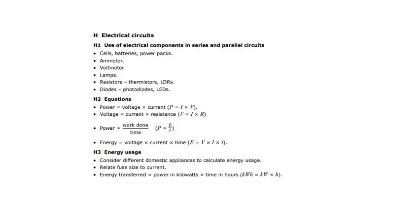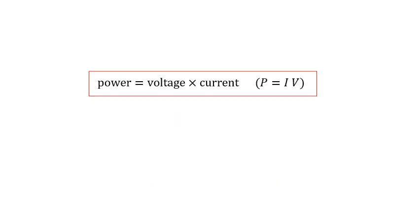First equation: power. Power is voltage times current. I'm going to try and just look at the equations. P equals I times V. They say power is voltage times current. Why didn't they just say P equals VI? Because they're mad, basically. Anyway, power is voltage times current.